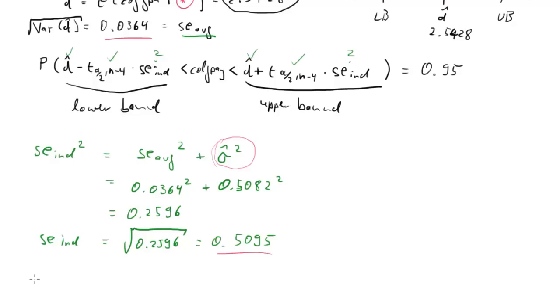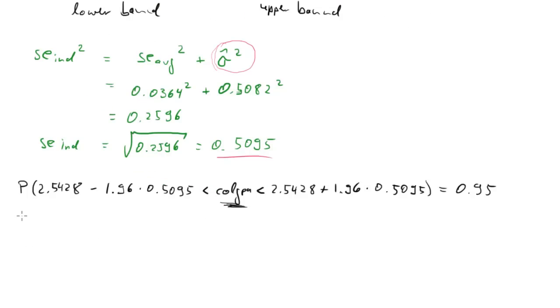So if you compare these two values, 0.0364 and this one, you can see that the individual standard error is much much larger, by one order of magnitude larger than the standard error of the average. That means it is dominated by this, by the standard error of the regression. So it means there's a lot of individual variation in this problem. So now we can go back to our prediction interval, so we can fill in all the values which we have. d hat is 2.5428 minus the t value we said that would be 1.96 times the standard error, that is this guy, and that is going to be the lower bound.